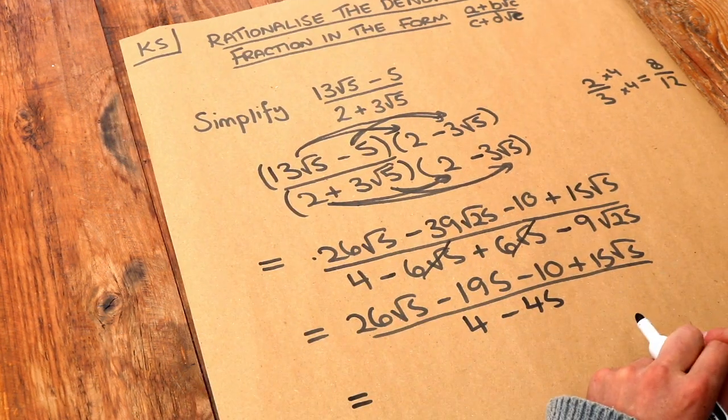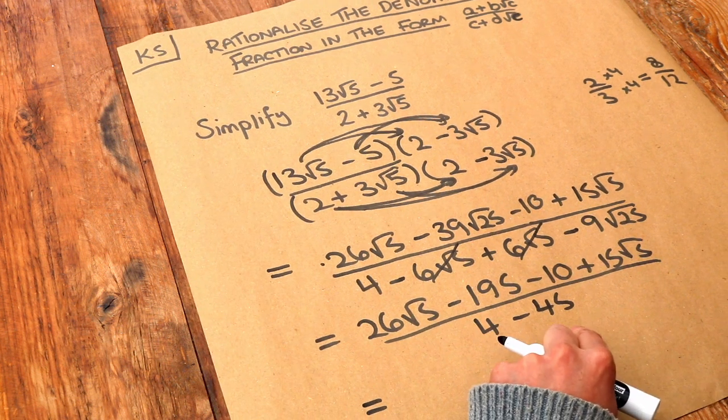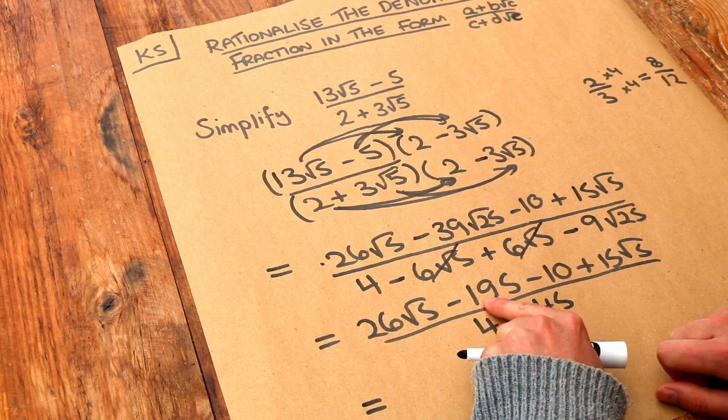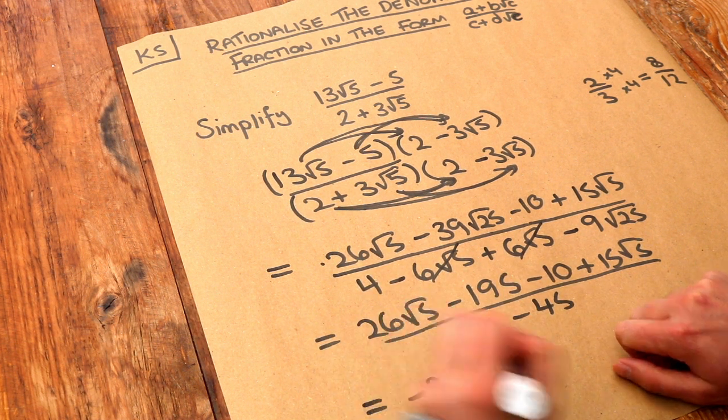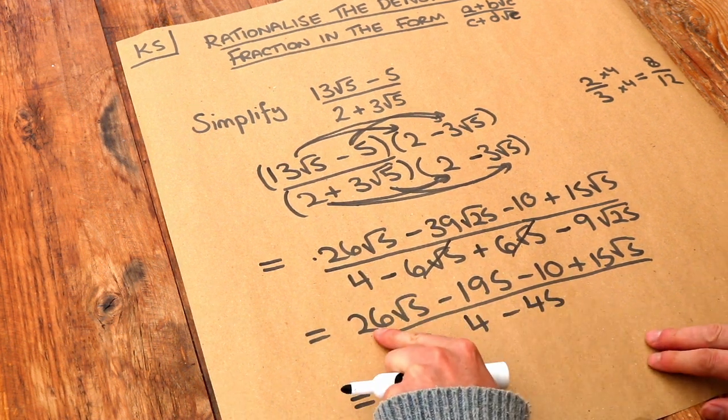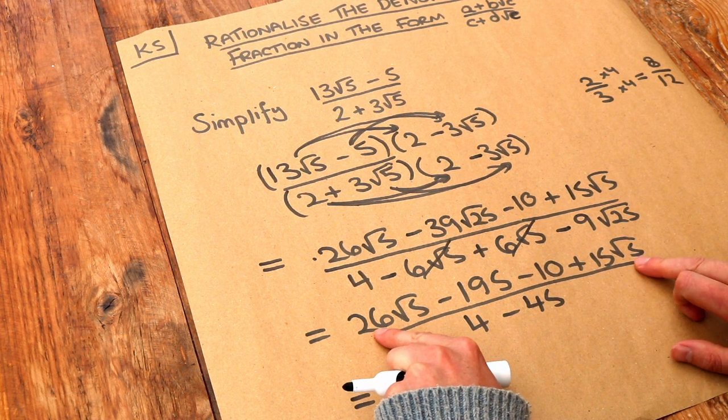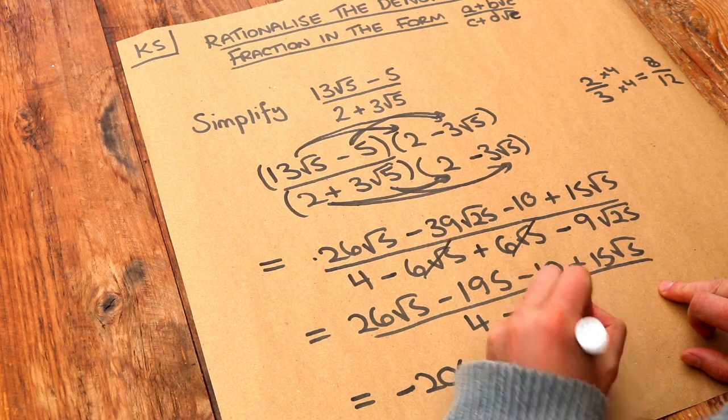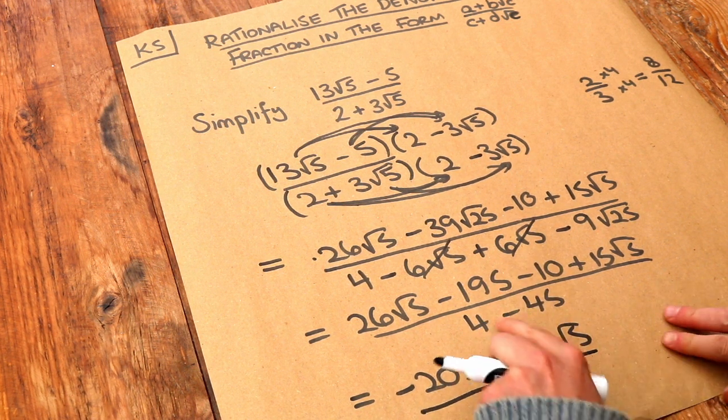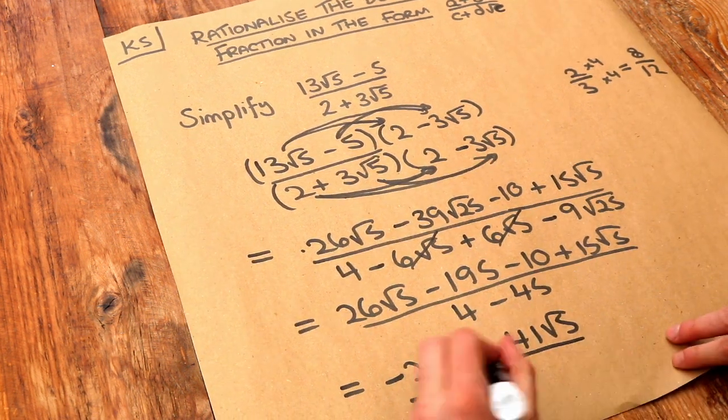And let's still simplify the top. Let's collect the non-surds together first. We've got minus 195 minus 10, which is minus 205. And then we've got the 26 root 5 plus the 15 root 5. That's plus 41 lots of root 5. And then 4 minus 45 is minus 41.